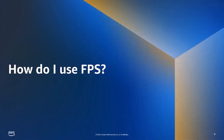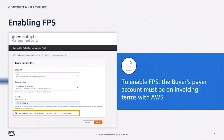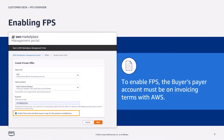How do I use FPS? In order to enable Flexible Payment Schedule, the seller will need to select the checkbox that says "enable fixed units and allow buyer to pay for this product in installments."